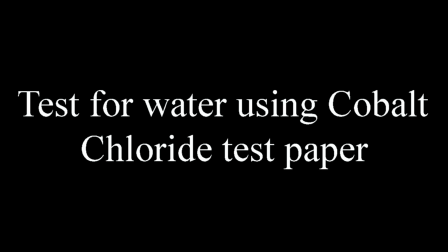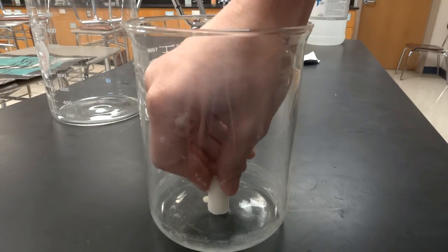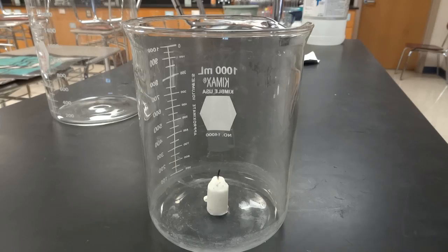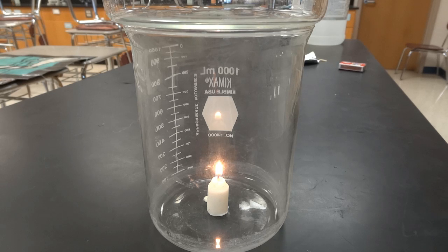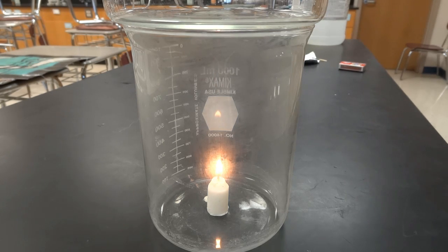The second primary product of combustion is water. We can test for this with cobalt chloride test paper. It's initially blue, but when it reacts with water it turns pink. Here's our beaker again with a candle on the bottom — this time there's no lime water, only the candle. I cover the beaker to trap as much water vapor as I possibly can.